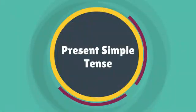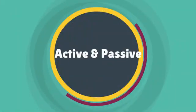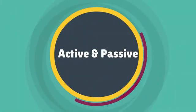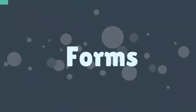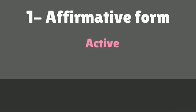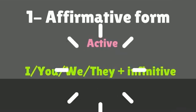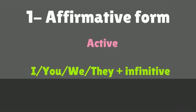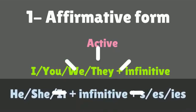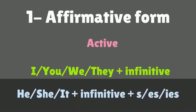Present Simple Tense: Active and Passive Forms. Affirmative Form — Active: I, You, We, They plus infinitive; He, She, It plus infinitive plus S or ES or IES.